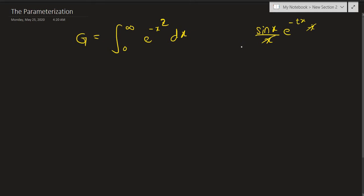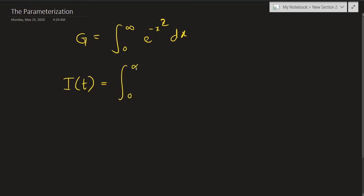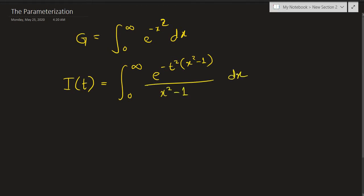Thinking about a parameterization for this integral might seem highly non-intuitive, but I will try to provide some intuition towards the later half of the video. So let's call the parameterized form I(t), which is defined as the integral from 0 to infinity of e raised to negative t squared times x squared, minus 1, divided by x squared minus 1, dx.